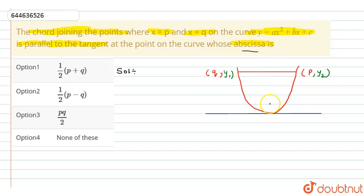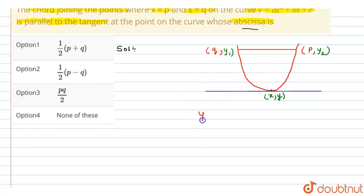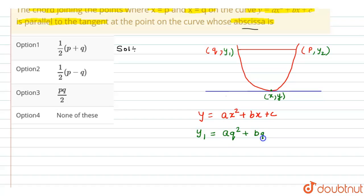We know that a tangent touches only one point on the curve. We let this point be called (x, y). We have the equation of the curve y equals ax squared plus bx plus c. For points y1 and y2, these points lie on the curve. For x equal to q, we get y1 equal to aq squared plus bq plus c. For x equal to p, we get y2 equal to ap squared plus bp plus c.